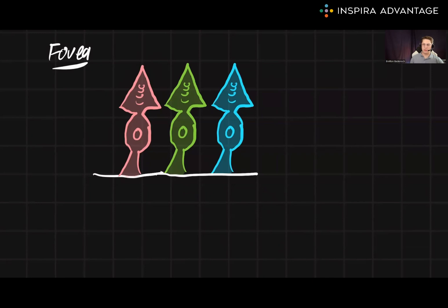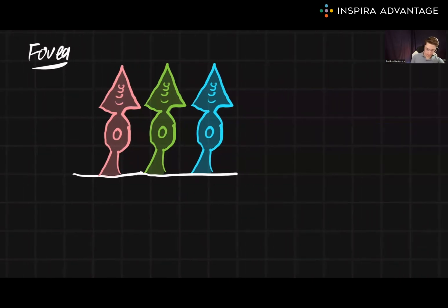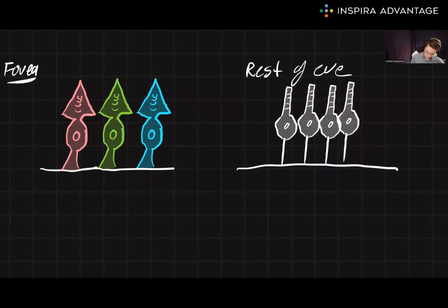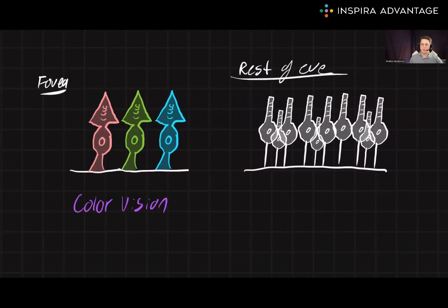Other parts of the retina have more of another type of photoreceptor cell called rods. Rods respond to the presence or absence of light and allow us to see in black and white vision. This is why it's easier to see light out of the corners of your eyes, the corner of your visual field.